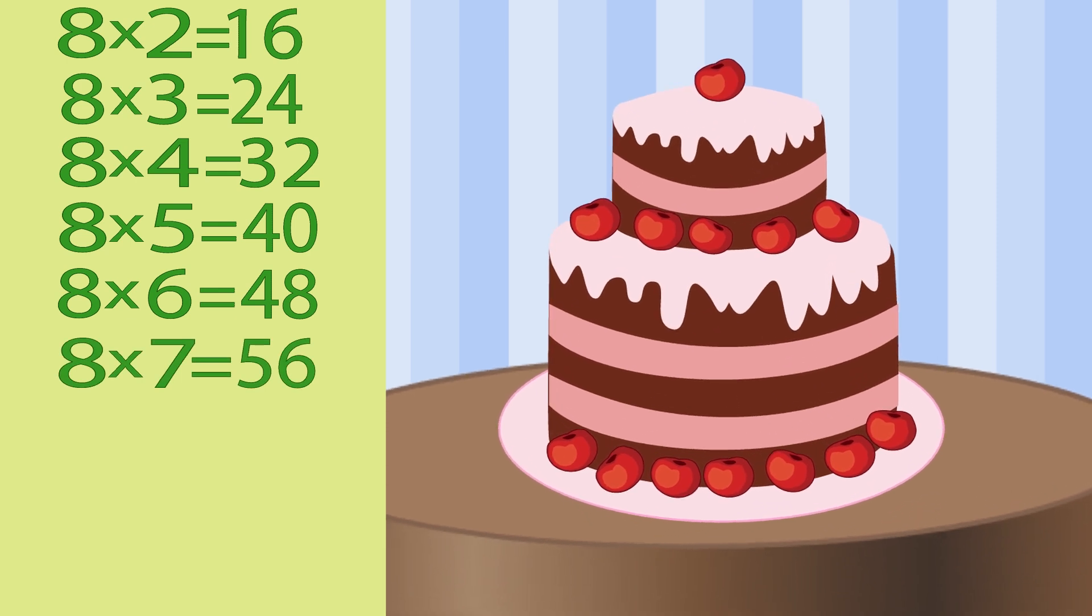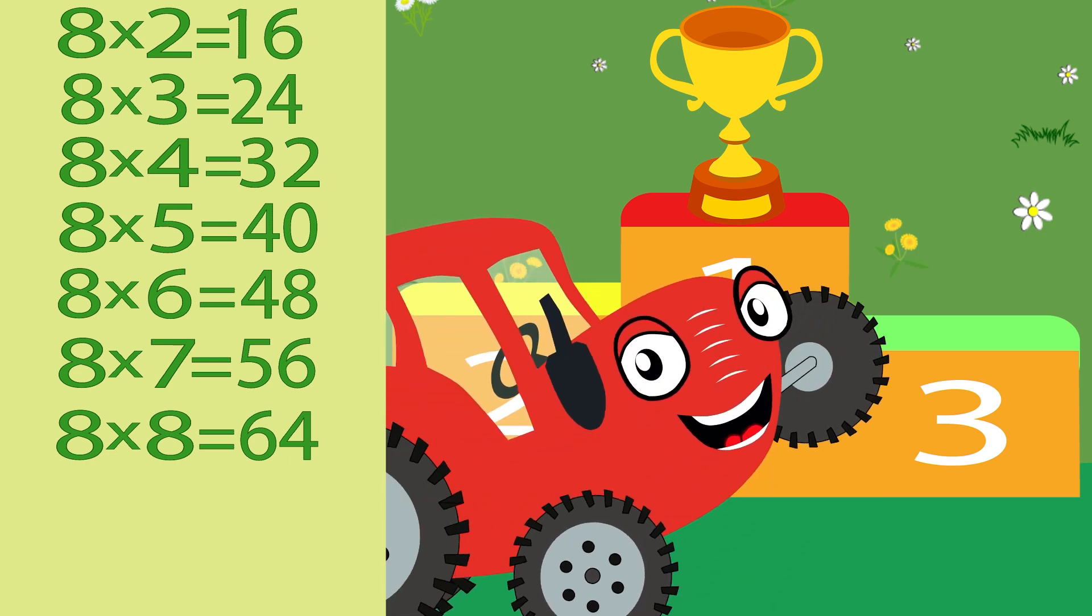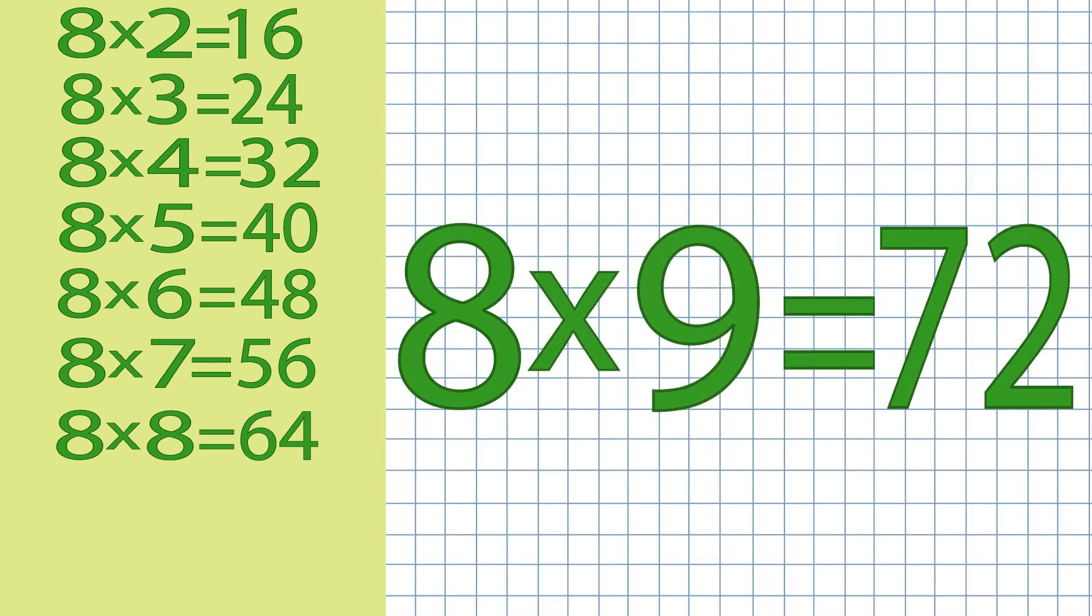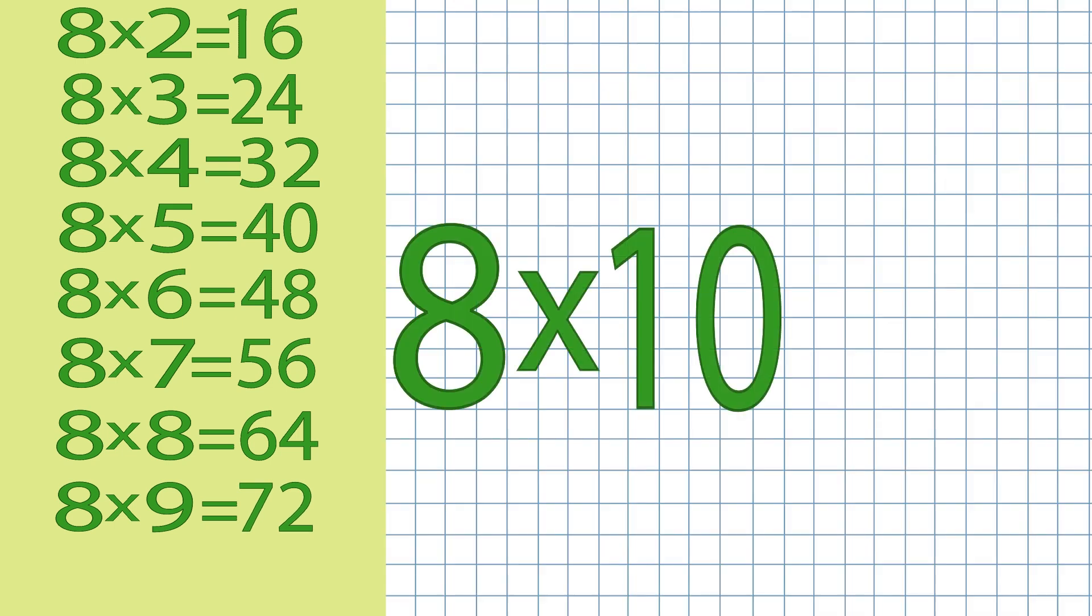Eight times seven is fifty-six. We will eat a tasty cake. Eight times eight is sixty-four. The tractor in the competition won. Eight times nine is seventy-two. This lift suit us no more.